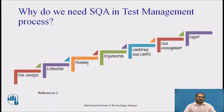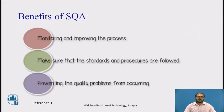The different stages we need to follow in measuring software quality assurance are: risk analysis, estimation, running organization, and planning. Benefits of software quality assurance include: monitoring and improving the process, making sure that the standards and procedures are followed, and preventing quality problems from occurring.